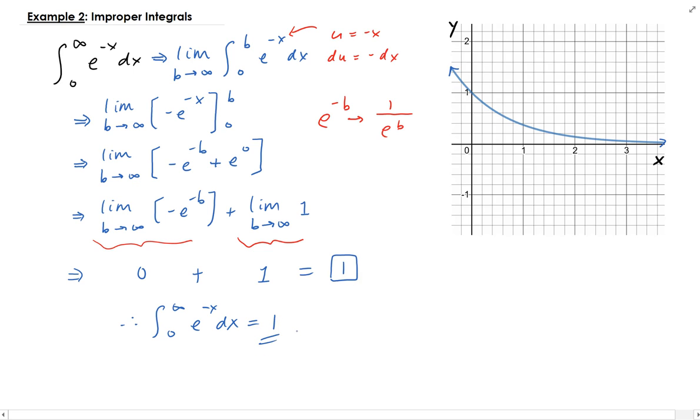Over here I have the graph of e to the minus x. What this tells us geometrically is we have the lower bound here at zero and your upper bound is approaching infinity. As we increase b, the area, the corresponding area that you see, is approaching one. The area is approaching one as b approaches infinity.